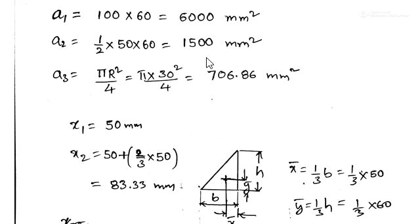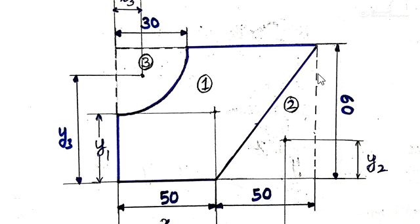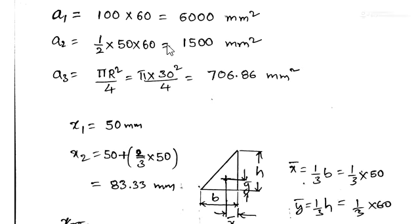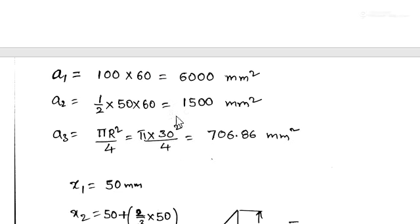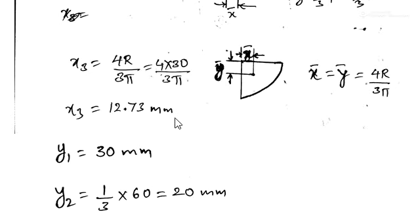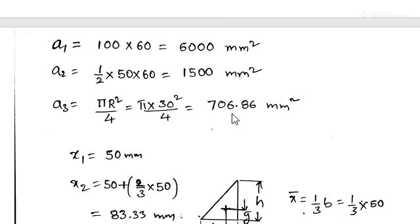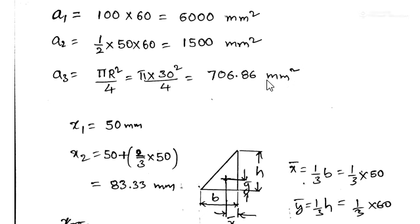Area 1, the rectangle 100 by 60, gives A1 = 100 × 60 = 6000 mm². Area 2, the right-angle triangle with base 50 and height 60, gives A2 = ½ × 50 × 60 = 1500 mm². Area 3, the quadrant, gives A3 = πr²/4 = π(30)²/4 = 706.86 mm².